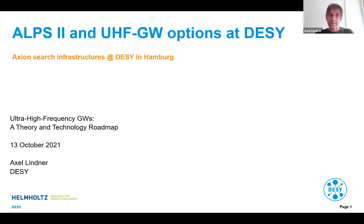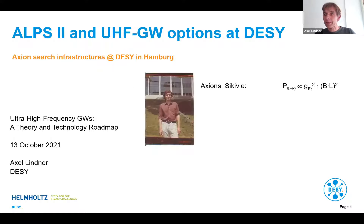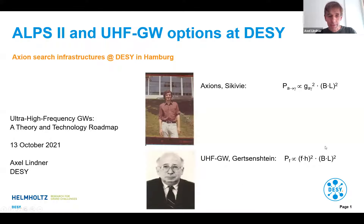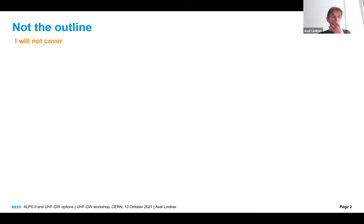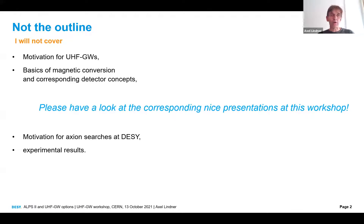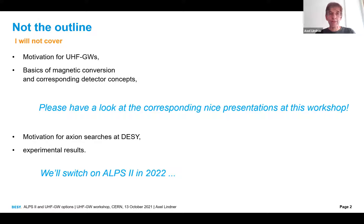As mentioned already several times, what's very important for axions is the so-called Primakoff process, where you convert axions to photons inside a strong magnetic dipole field. The inverse Gertsenshtein effect has very similar experimental properties. In this talk I'm not going to cover any motivation for gravitational wave searches, nor any basics of the magnetic conversion, and also not going to motivate much for an axion search at DESY. I cannot comment on results because we are just switching on ALPS 2 next year.